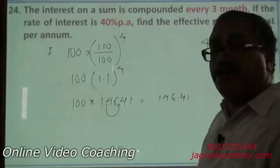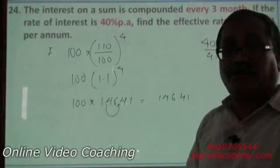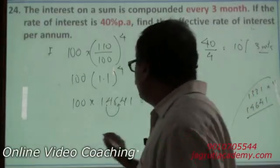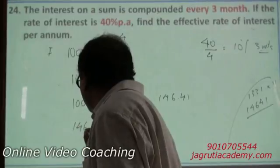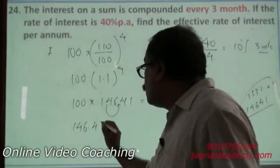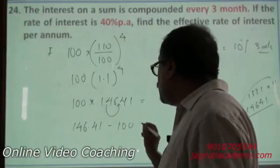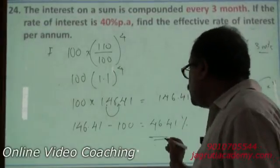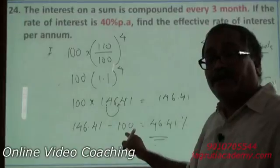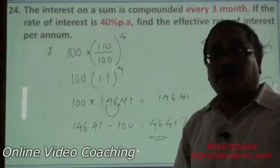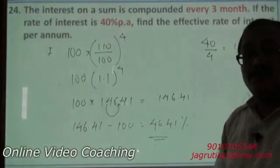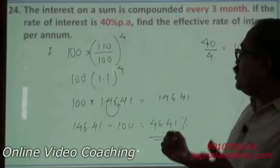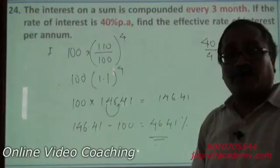What was your previous value? 100. The end value is 146.41. Then what is the interest you paid in the period of 1 year? 146.41 minus 100, that is equal to 46.41. This itself is a percentage because you are paying this amount over 100. Therefore this is percentage. What is effective interest? The effective interest is 46.41 percent. That means at the end of the year you are not paying 40 percent, you are paying 46.41.